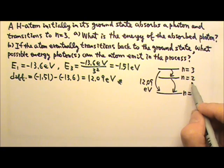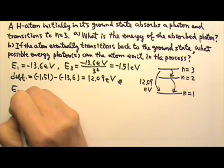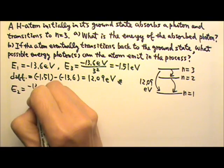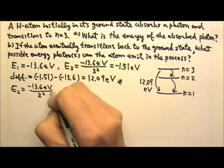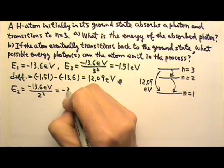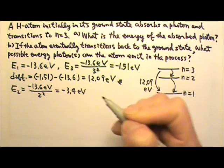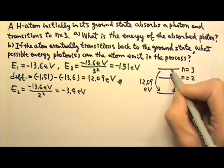So E2 is negative 13.6 eV over 2 squared, and this gives me negative 3.4 eV.